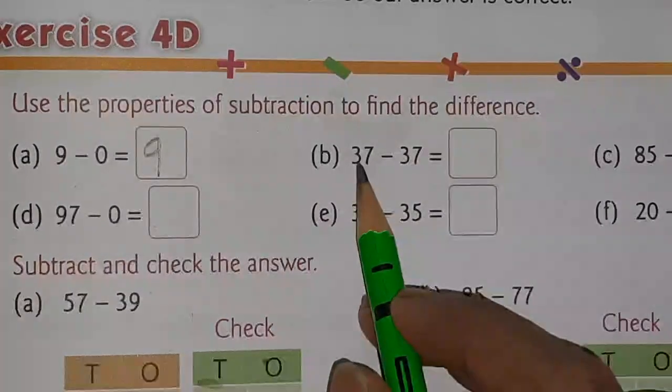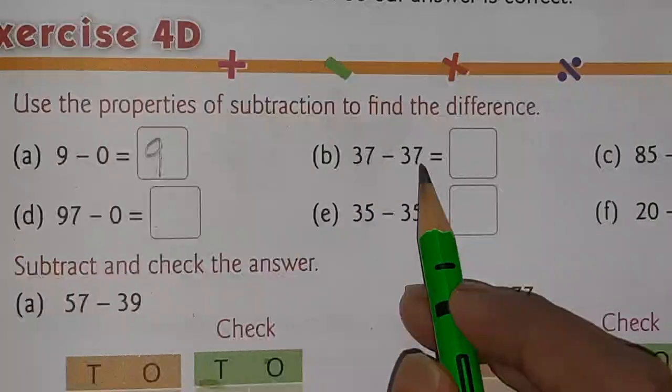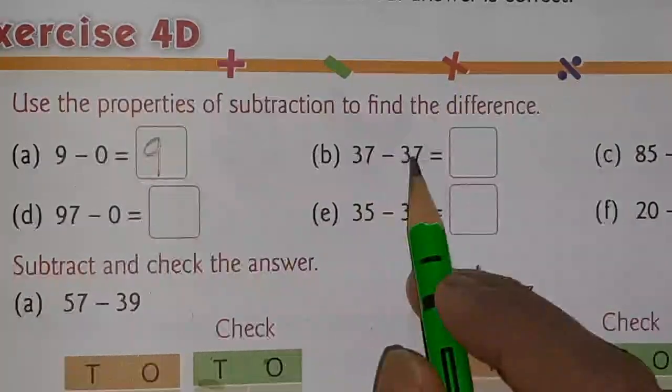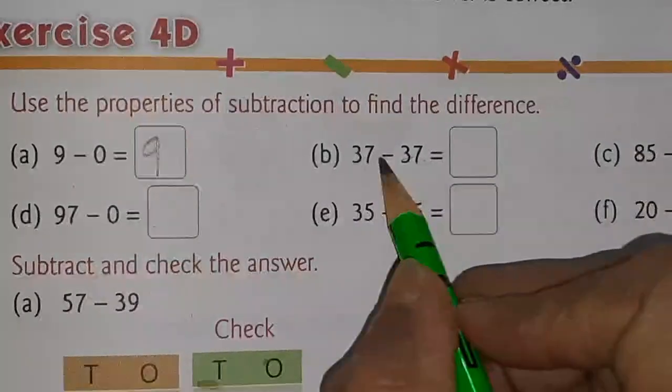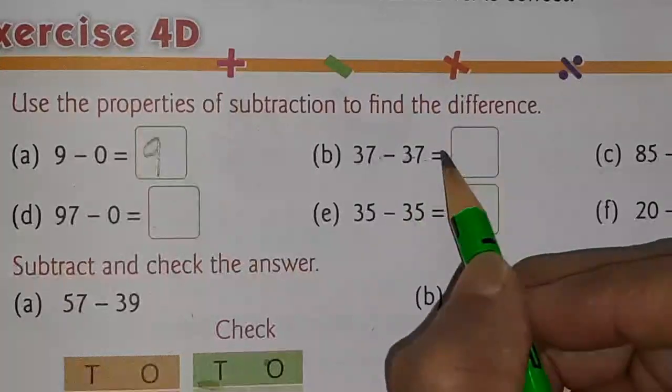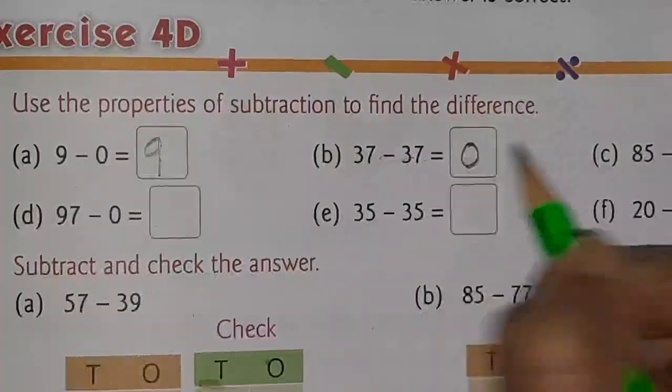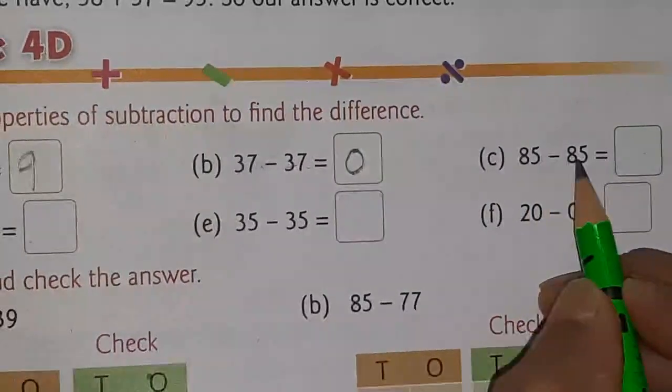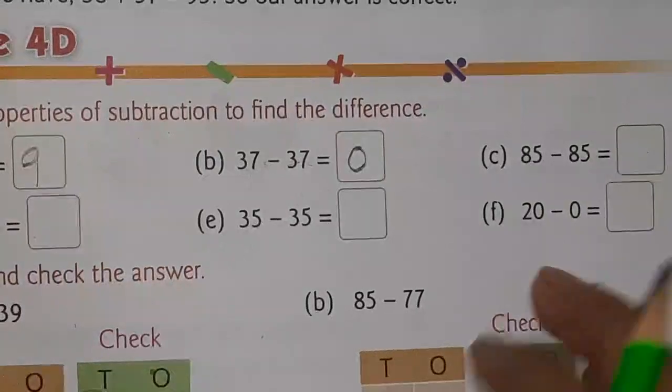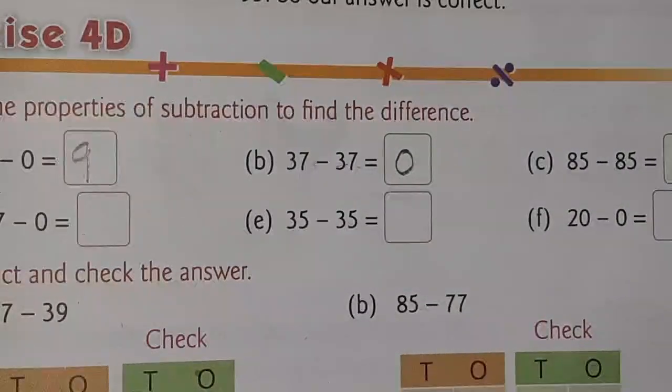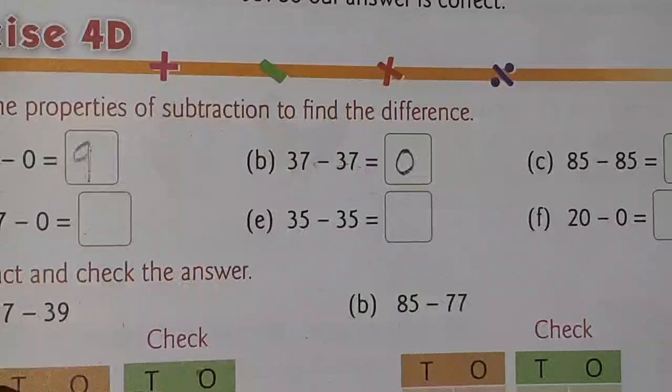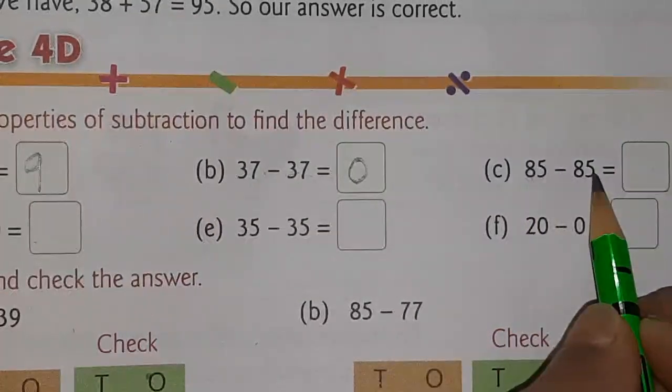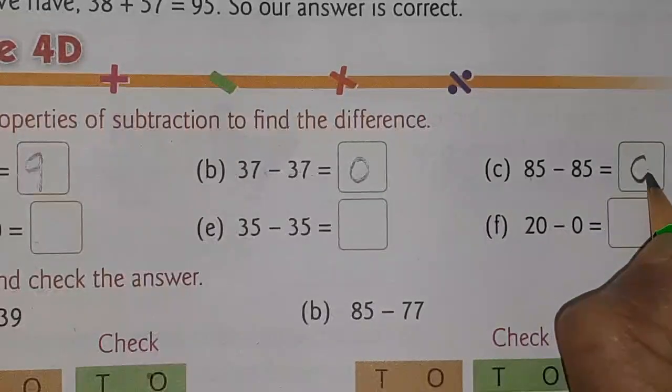B one we'll see 37 minus 37. Means that you are subtracting same number from each other. So, here same number will cut. Then you will get 0 as an answer. Next sum is also same like that. 85 minus 85. You can do on your fingers. Means if 2 minus 2 you are doing. Then your answer will come 0. The same way 85 minus 85, you will get 0.